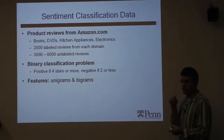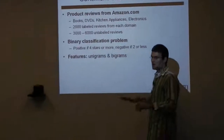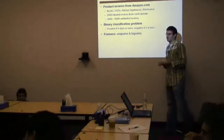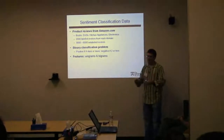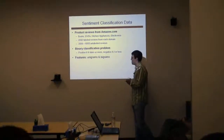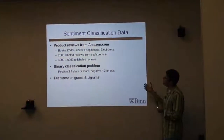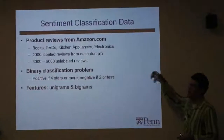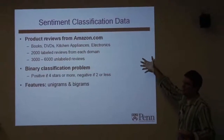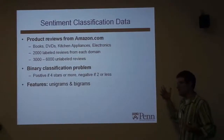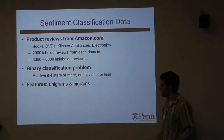When we say unlabeled, we did download the star ratings for those 3,000 to 6,000 reviews, but don't show them to the algorithm — this is purely for experimental purposes. We sorted, curated, and tried to throw out duplicates and find reasonable reviews for our labeled data, but basically they come from the same ultimate source.